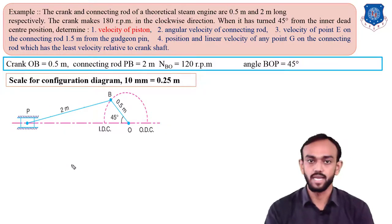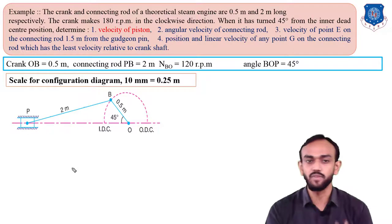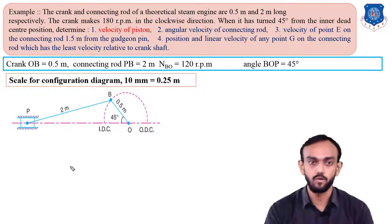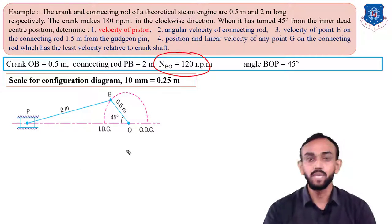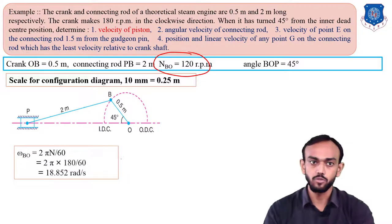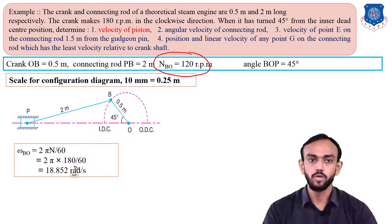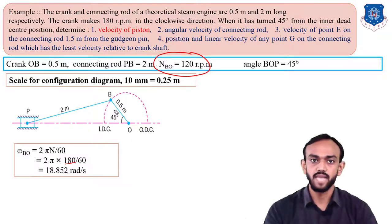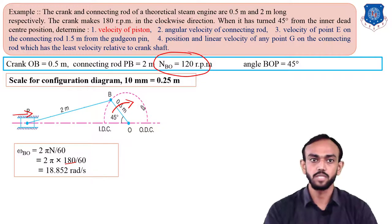Now we have to draw the velocity diagram. For any velocity diagram, you need the velocity of at least one element — in 99% of cases this is the crank velocity. Here they have given the RPM of crank OB, so we find the angular velocity using 2πN/60. Substituting N = 180 RPM, we get the angular velocity of the crank as 18.85 radians per second. Since the crank rotates clockwise from the inner dead center position, this is the direction of rotation.